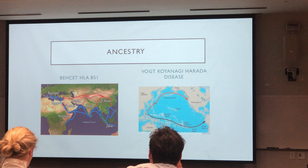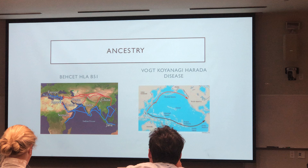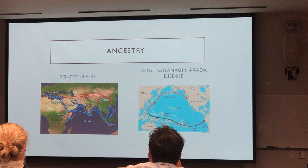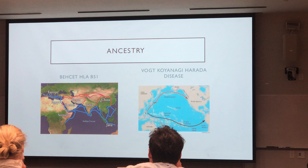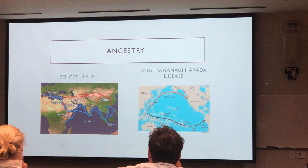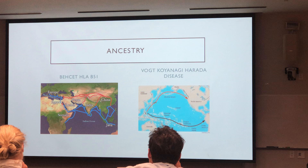Another condition in relation to ancestry is Vogt-Koyanagi-Harada. It's quite often seen in Japan, but in the United States, you would see VKH among American Indians, particularly those of Cherokee heritage. It's believed the genetic predisposition came across the Bering Strait thousands of years ago. There's another line going southward from Asia into South America, which may explain why we see VKH among Latinos, particularly in L.A. — there was a lot of trade, particularly during the Spanish Conquistador era, where Spain would bring silk and gold from Asia to Europe by way of Central and South America.